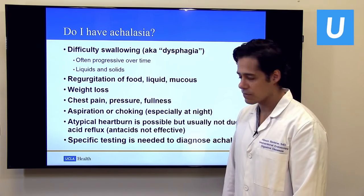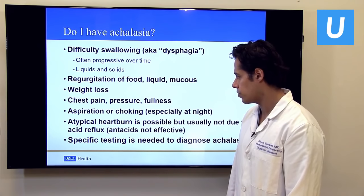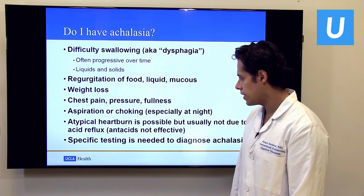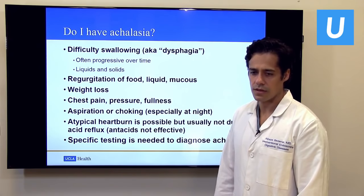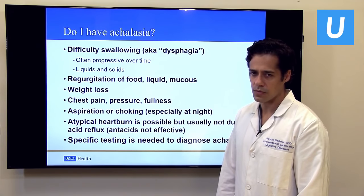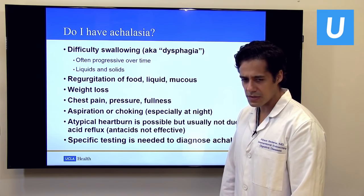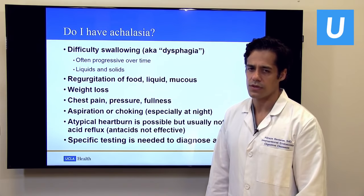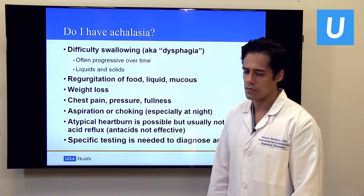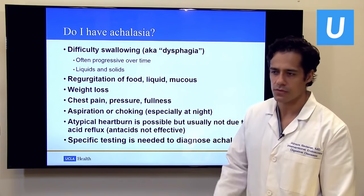Other symptoms include regurgitation of liquid, mucus, or undigested food; weight loss because nutrients aren't getting where they need to go; chest pain, pressure, and fullness; and aspiration or choking sensations, especially when food comes up at night and can enter the lungs — which can even cause serious pneumonia. Heartburn is also possible, though it's usually atypical and doesn't respond to normal antacids. The heartburn in achalasia is usually due to fermentation of food in the esophagus, not acid.